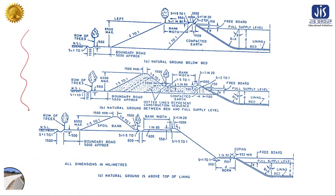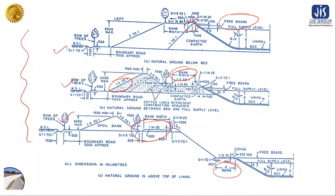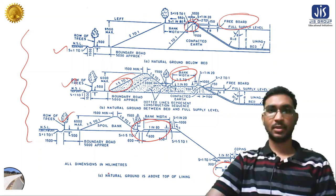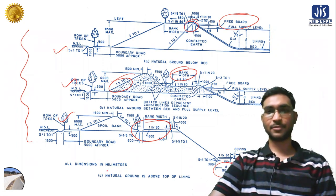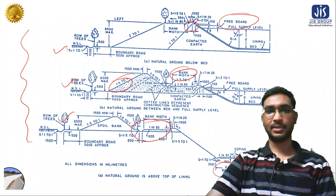These are the typical cross sections of lined canals. All the design parameters discussed in this lecture — freeboard, dowels, bank width, berm, roadway and drainage, and side slopes — are shown in the figures, along with typical dimensions. In the next lecture we will discuss the design steps of lined canals with the help of numericals. Till then, stay safe and stay happy.